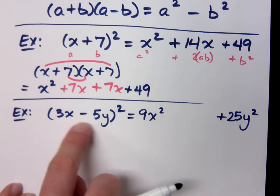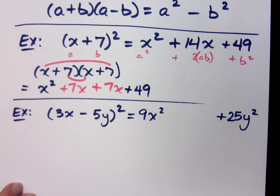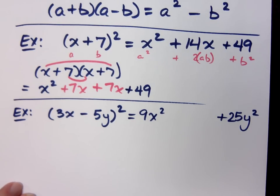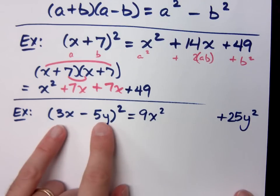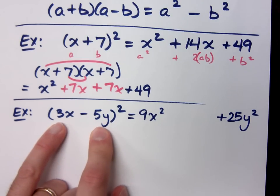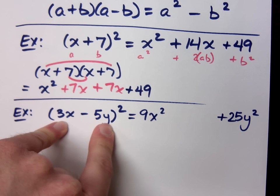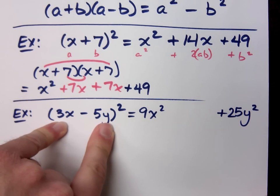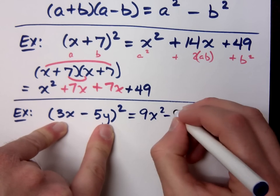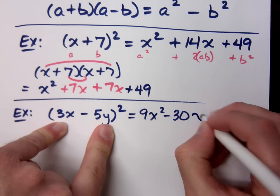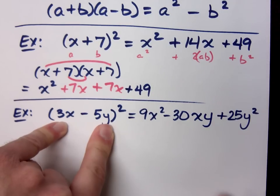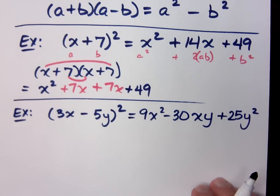Now the tricky part comes with the middle stuff. You have to multiply these two terms together and then do what? Multiply times 2. Double it. So if I multiply these two terms together, what do you get? Negative 15xy. If you had foiled, you'd see it twice. So if you double negative 15xy, you get what? Negative 30xy.